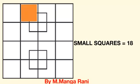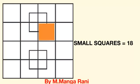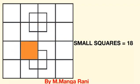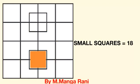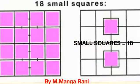1, 2, 3, 4, 5, 6, 7, 8, 9, 10, 11, 12, 13, 14, 15, 16, 17 and 18. There are 18 small squares.